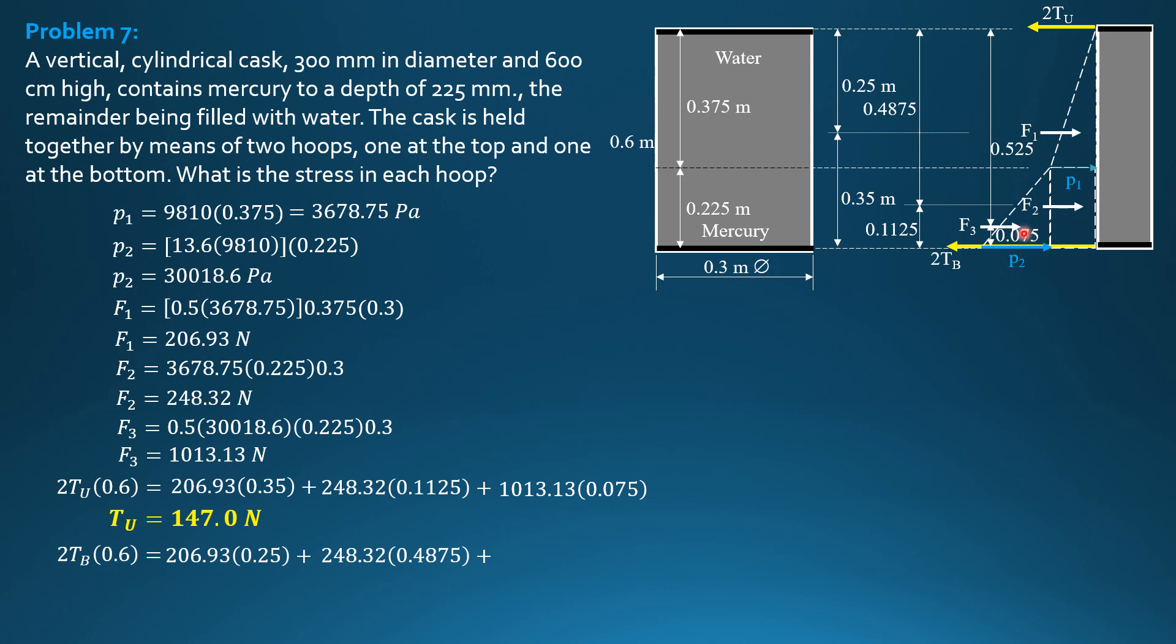Then plus F3, 1013.13 times 0.525. That's the moment arm. So tension in the bottom hoop is equal to 587.2 newtons.